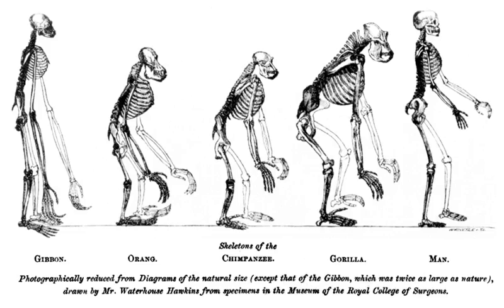Macroevolution and microevolution describe fundamentally identical processes on different time scales. Microevolution refers to small evolutionary changes typically described as changes in allele frequencies within a species or population, while macroevolution is evolution on a scale of separated gene pools. Macroevolutionary studies focus on change that occurs at or above the level of species.